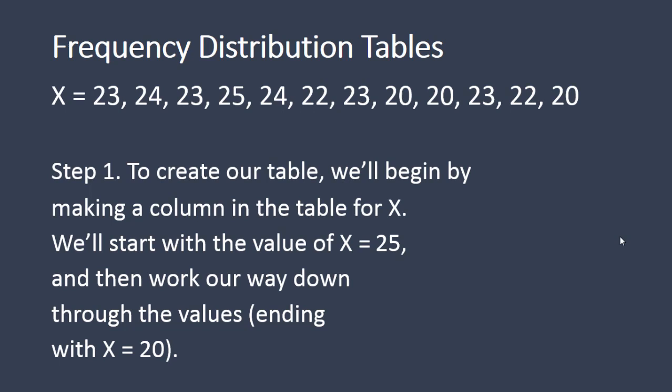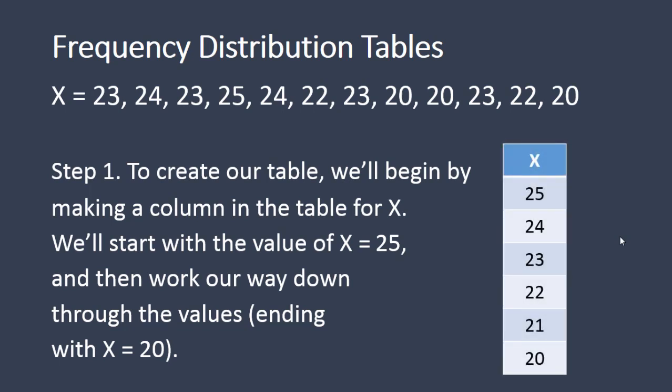As I mentioned previously, we'll begin with X, we'll make a column for X as you see on your screen, and we'll start with 25 and then we'll move all the way down here. So we have 25, 24, 23, 22. We included this 21 even though there were no values of 21, and that's because it's inside this range here. And then we have 20.